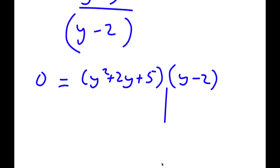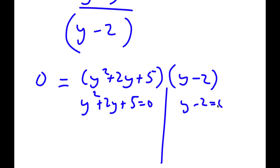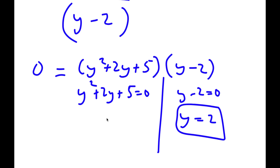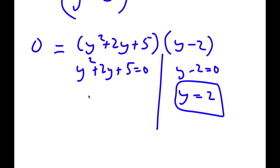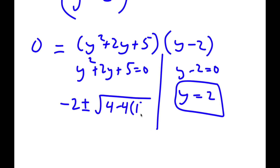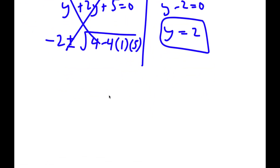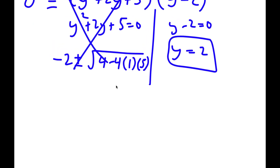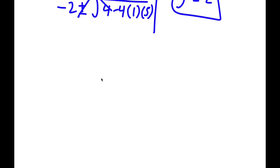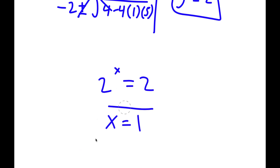This gives two equations: y squared plus 2y plus 5 equals 0, and y minus 2 equals 0. From y minus 2 equals 0, y equals 2. For y squared plus 2y plus 5 equals 0, using the quadratic formula gives a discriminant of 4 minus 20, which is the square root of negative 16 — we can't take the square root of a negative number, so that has no real solution. Therefore y equals 2, and since 2 to the power of x equals y equals 2, x equals 1.